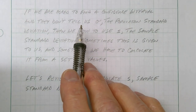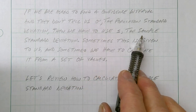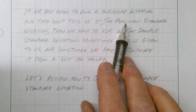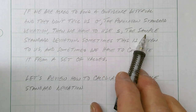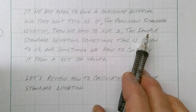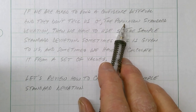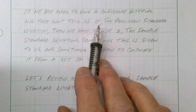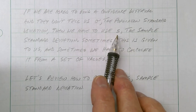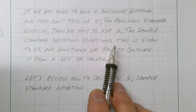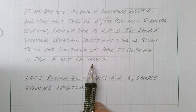If we're asked to find a confidence interval and they don't tell us the population standard deviation sigma, we have to use s, which is the sample standard deviation. The population is everybody, and we can't always measure everybody — sometimes we have to grab 10, 20, or 100 people and measure them instead. Sometimes the population standard deviation is given, and sometimes we have to calculate it from a set of values. I'll show you both ways.